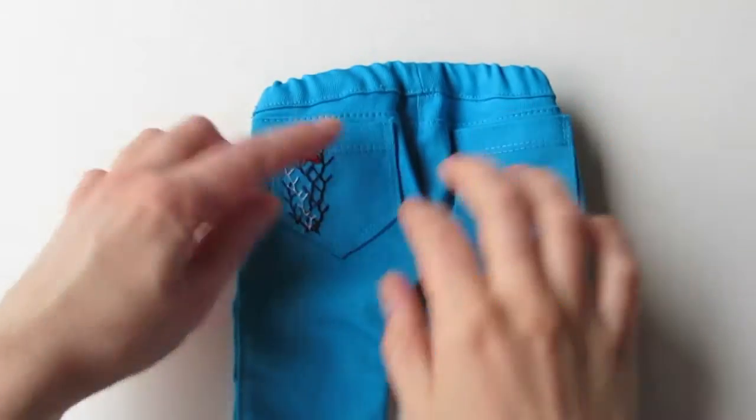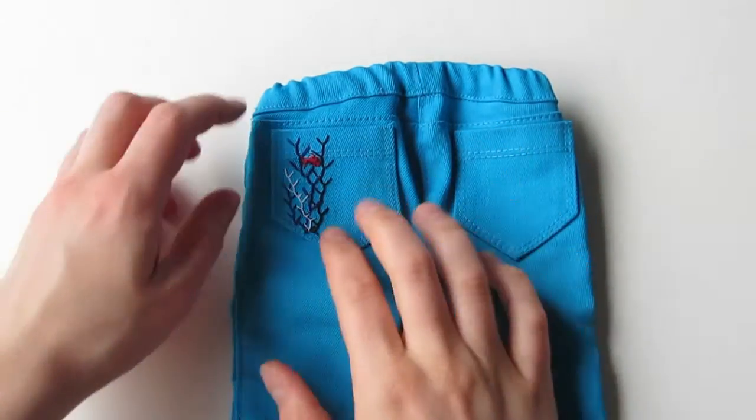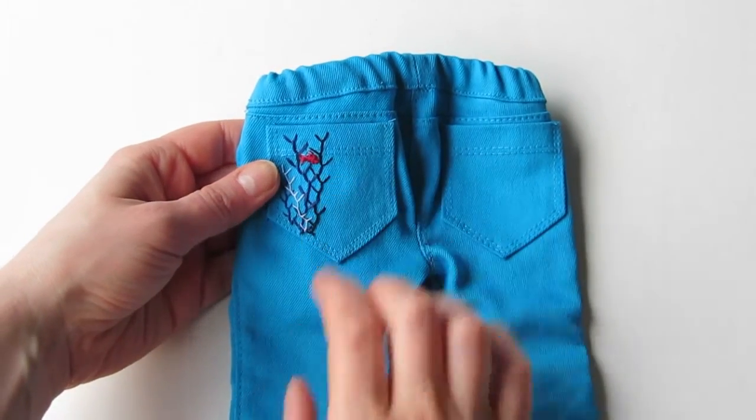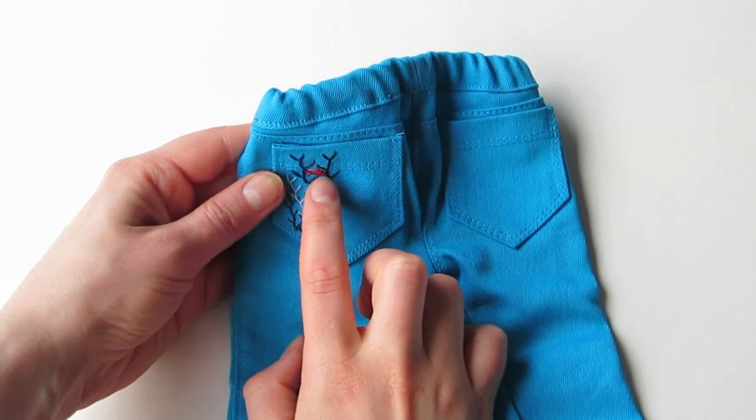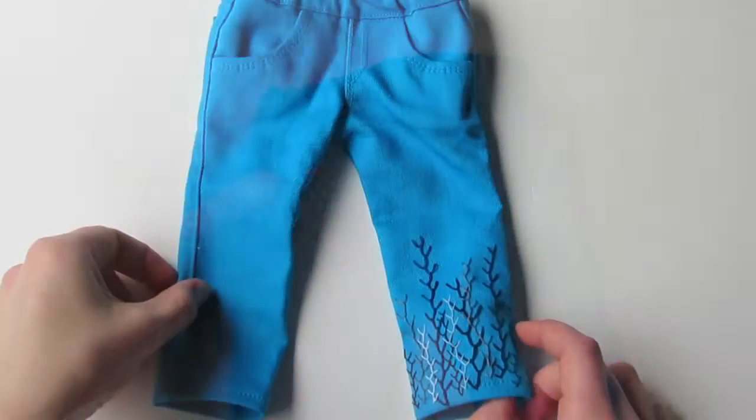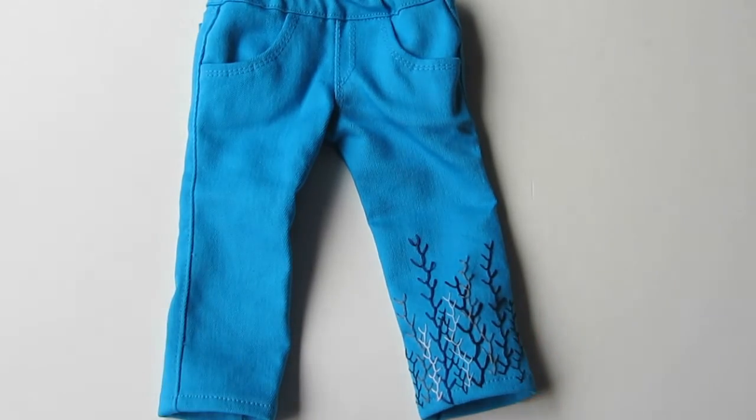I also went ahead and did some feather stitching on the back pocket just to tie the whole thing together. And for fun, I added a little red fish. The fish was pretty quick to do. I just used a combination of back stitch and satin stitch. And that's it. Thanks for following along today, guys, and I hope you have fun with this.